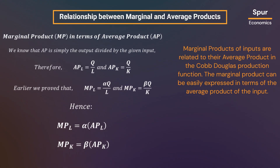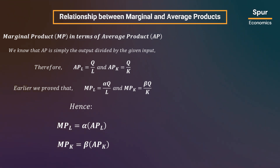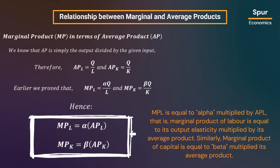The marginal products of inputs are related to their average products in the Cobb-Douglas production function. The marginal product can be easily expressed in terms of the average product of the input. Average product is simply output Q divided by the input, so APL equals Q divided by L and APK equals Q divided by K. We derived that MPL equals alpha times Q divided by L, and MPK equals beta times Q divided by K. Substituting the average products, we get that MPL equals alpha multiplied by APL, and MPK equals beta multiplied by APK. That is, the marginal product of an input equals its output elasticity multiplied by its average product.